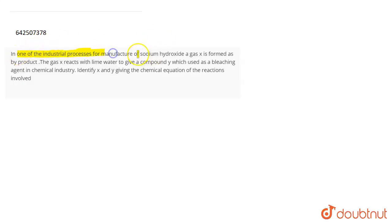The question is: In one of the industrial processes for the manufacture of sodium hydroxide, a gas X is formed as a byproduct. The gas X reacts with lime water to give a compound Y, which is used as a bleaching agent in the chemical industry. Identify X and Y and give the chemical equations for the reactions involved.